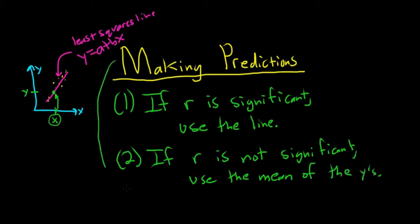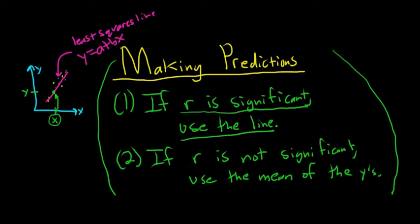So as you're working through the problems that follow, and as you're watching the videos that follow this one, most of them will have to make predictions. You always have to check first. If r is significant, you use the line to make a prediction. If r is not significant, you use the mean of the y's. That's it for this video. In the next video, you'll see examples of all of this.